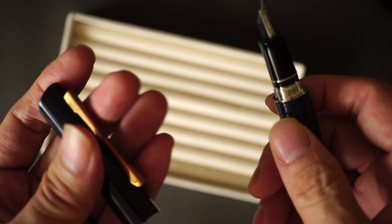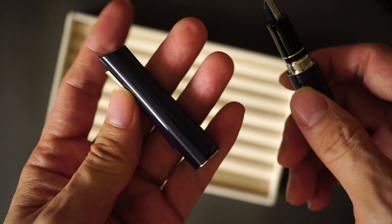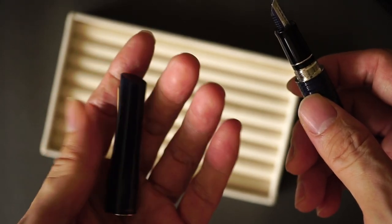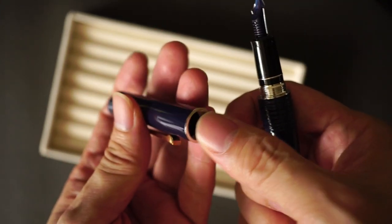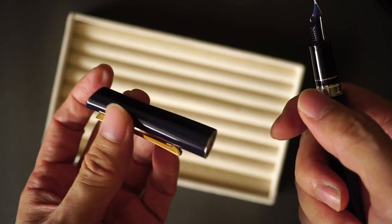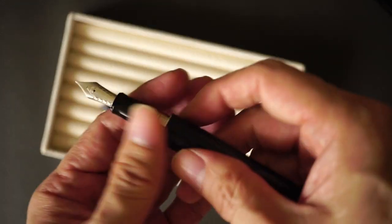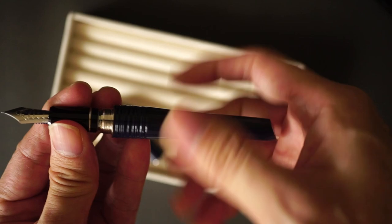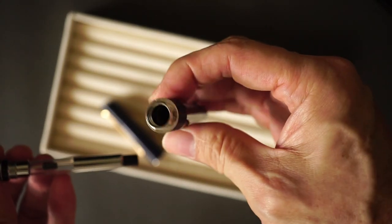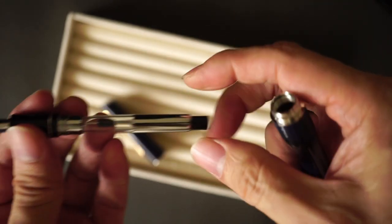So one thing to note is the pen actually is made of kind of a metal alloy. So the cap actually has metal threads and it has a little bit of heft to it. And the rest of the body is also made of alloy. So this part of the pen also has a little bit of heft to it.